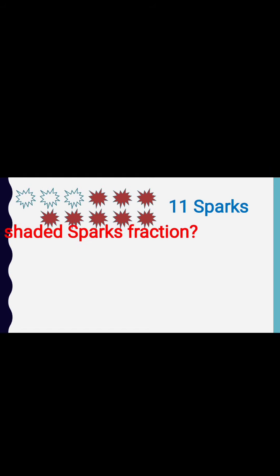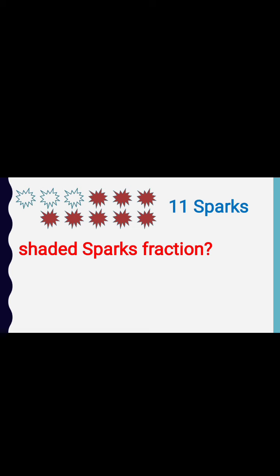Now I will make them into a fraction. Shaded sparks — what will the fraction of the shaded sparks be? There are 8 sparks which are shaded. So I will write 8, then put a fraction sign — a line, a bar. And then I will write 11, because the total number of sparks is 11. So the fraction of shaded sparks is 8 upon 11. Similarly, unshaded sparks — the fraction is 3 upon 11.